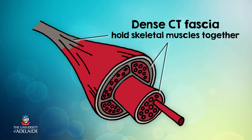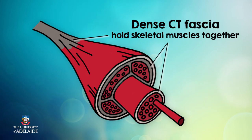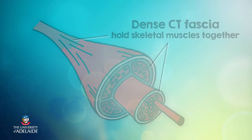What if an orange lacked these types of connecting sheets? The juicy pods would collapse. Similarly, the deeper dense connective tissue sheets hold the individual muscle bundles together to form a larger muscle.